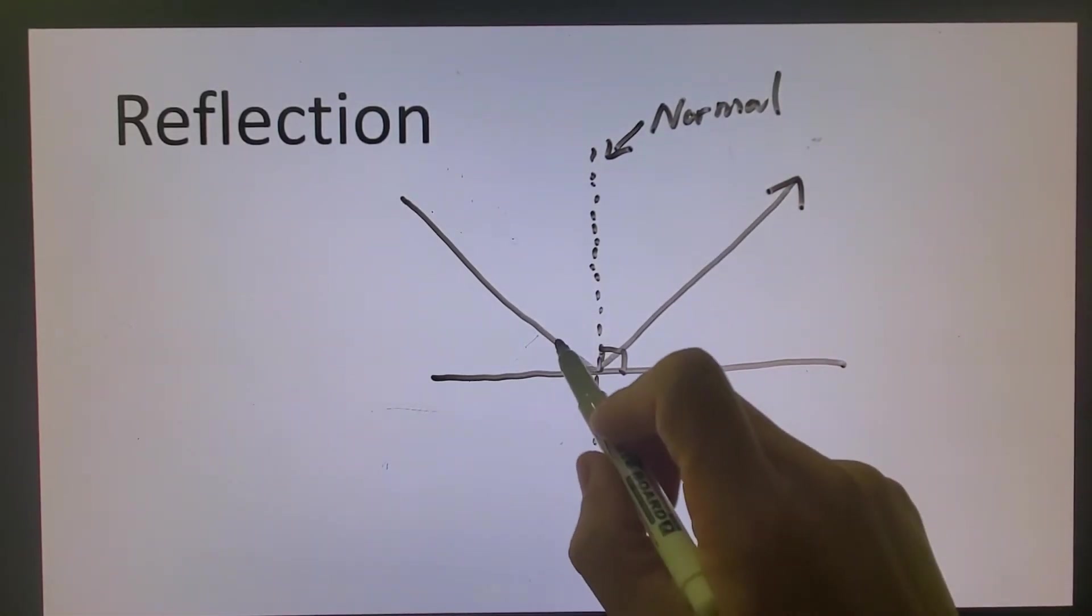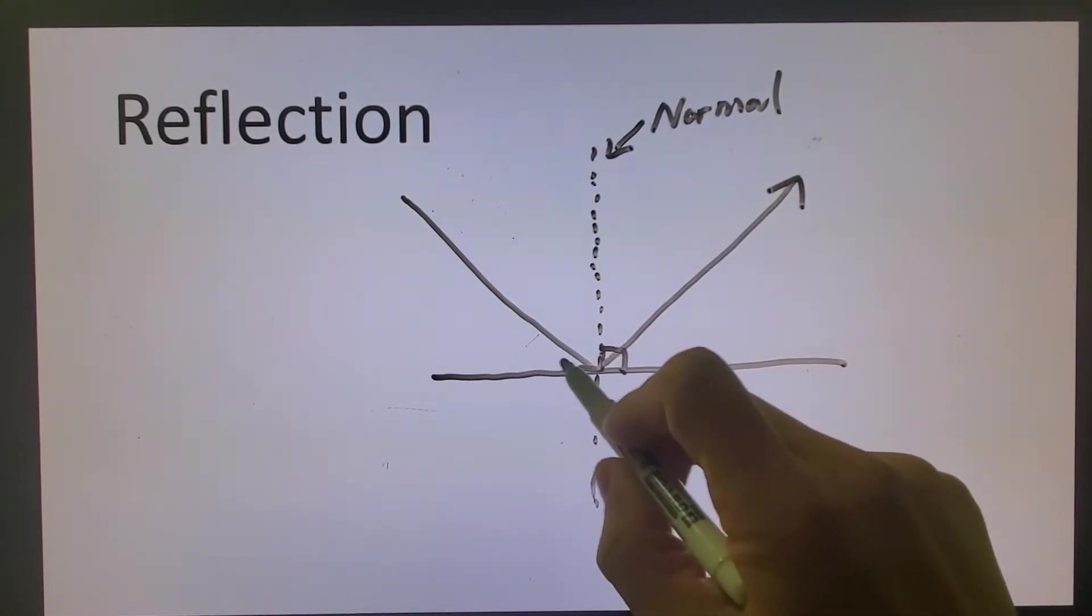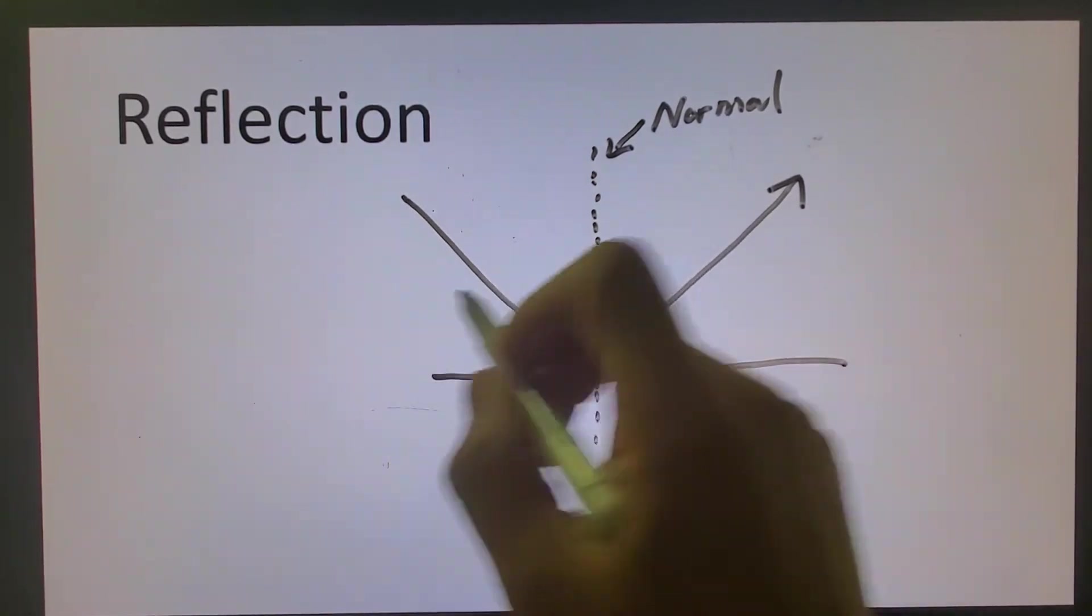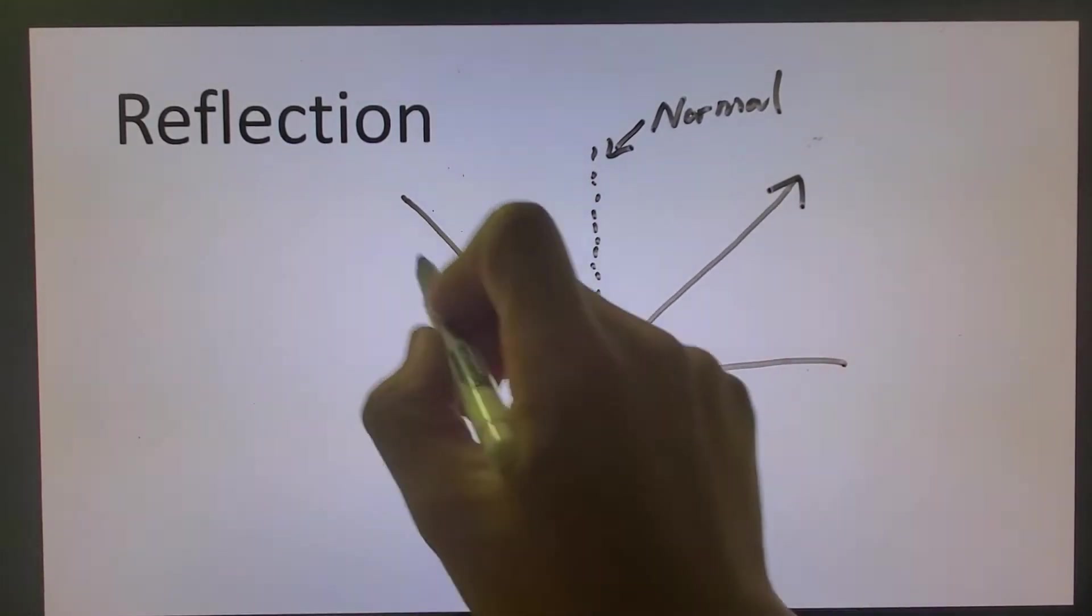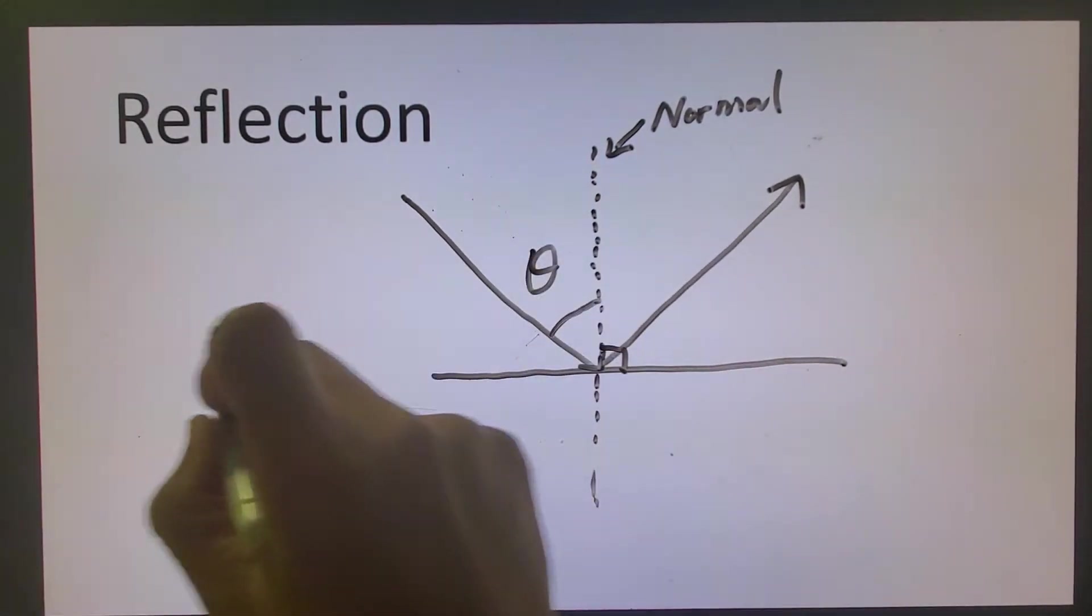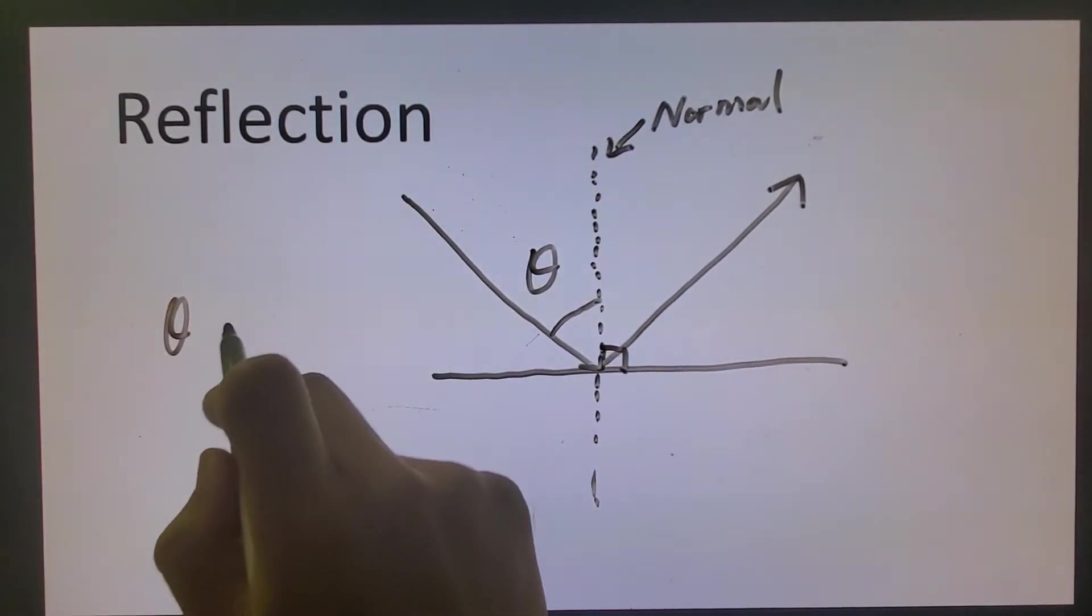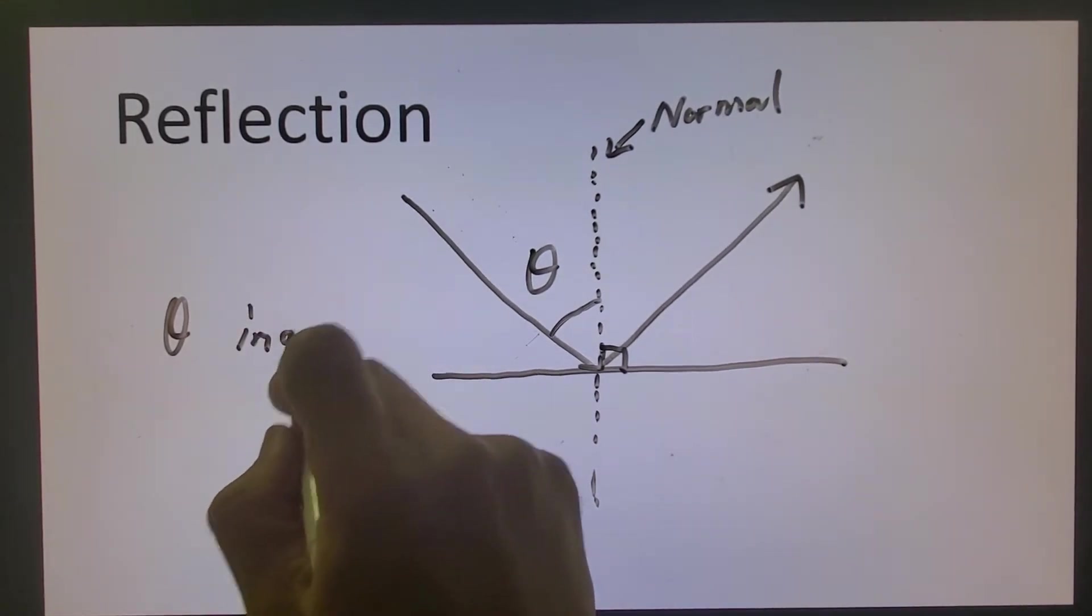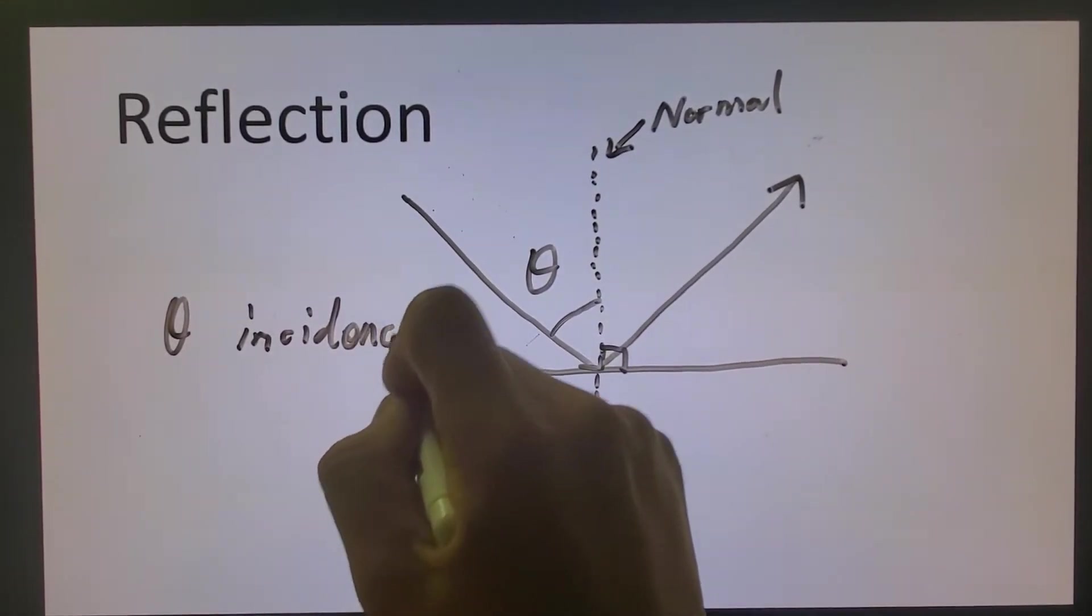The angle between the beam that is shining in is called incidence beam, and therefore this angle over here is called, let's call it theta, so theta is called the incidence angle.